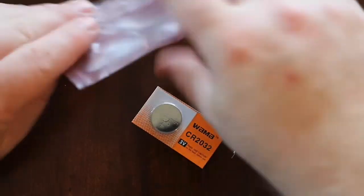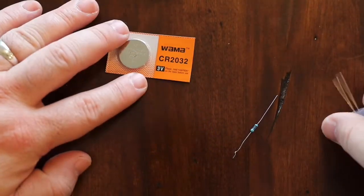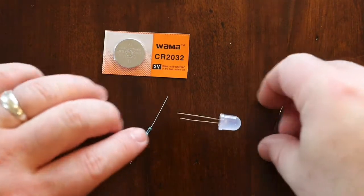If you take all your items out of the kit, you'll notice you have a battery, a resistor, and an LED.